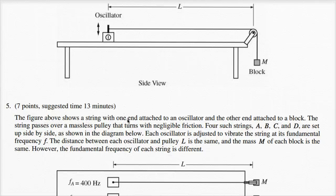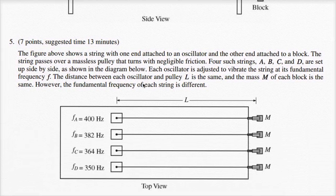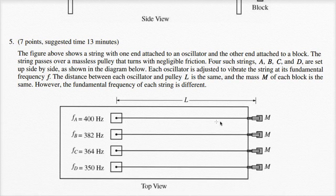The figure above shows a string with one end attached to an oscillator and the other end attached to a block. The string passes over a massless pulley that turns with negligible friction. Four such strings, A, B, C, and D, are set up side by side as shown in the diagram below. This is the top view of the oscillator-string-pulley-mass system, and we have four of them.